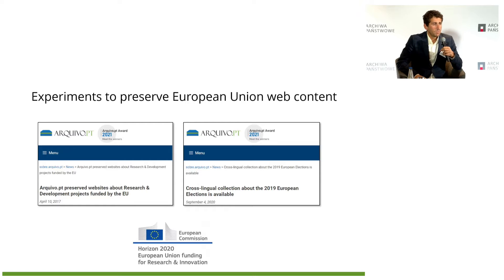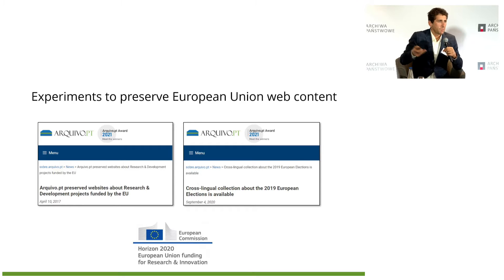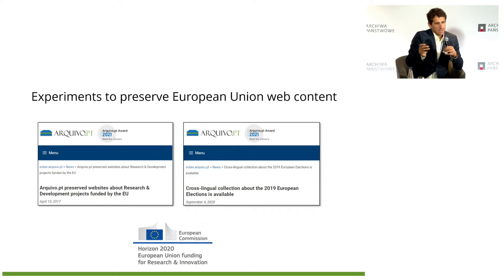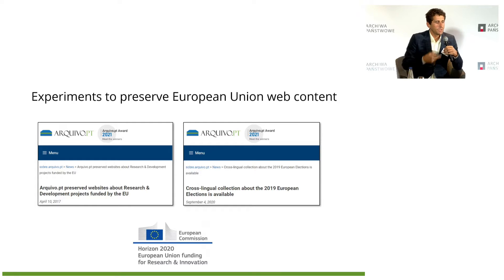We did follow-up experiments to preserve European Union web content. In collaboration with the Publications Office, we did a cross-language collection about the 2019 European elections. We collected a set of keywords about the elections, translated them using automatic translation, then asked the Publications Office of the European Union to help us verify all translations correctly. Then we submitted this information through a web search API, got the URLs, and collected the information. We have been preserving EU research and development project websites since FP4, and we are currently finishing the crawl for H2020 projects.